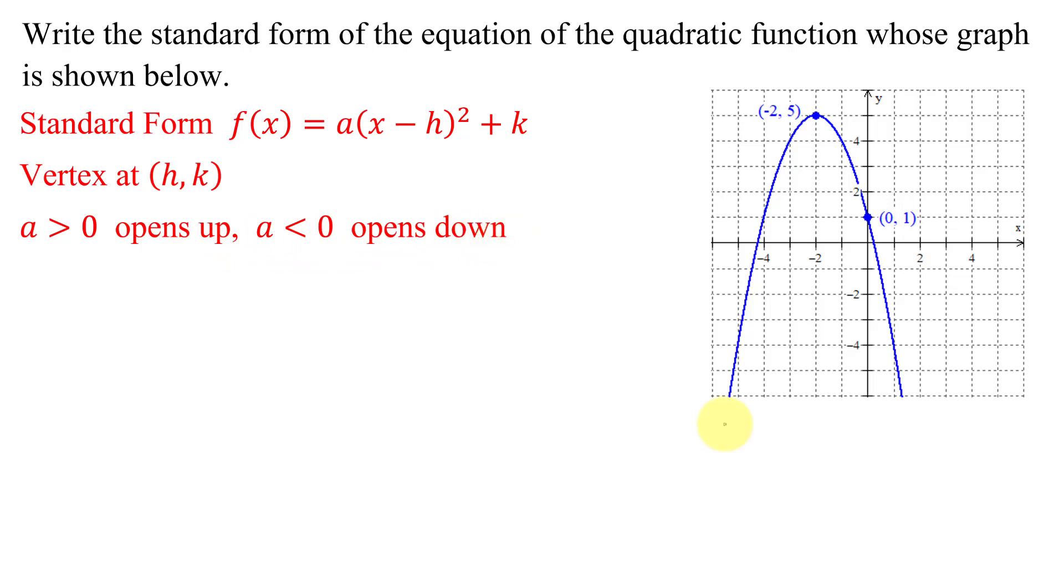So looking at our graph, we have a parabola that opens down. So I know in this case, the value of a had better turn out to be negative.